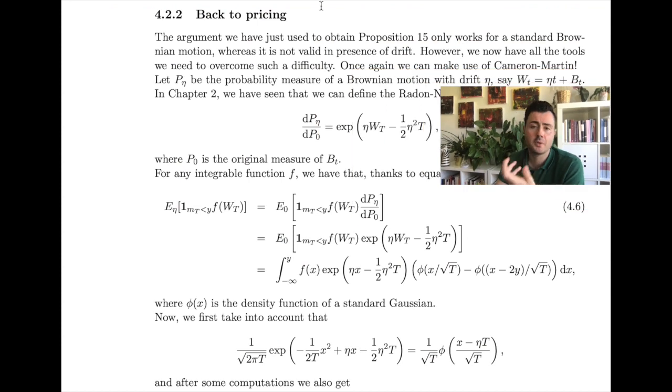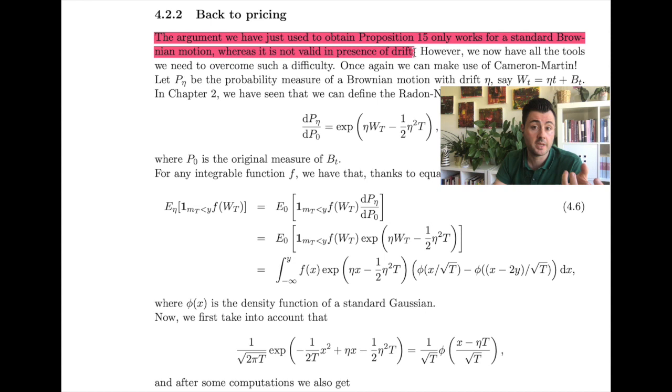Now, what we have just considered is the case of a standard Brownian motion. So the problem is what happens if we consider a Brownian motion with drift, which is typically our problem in the change of measure operation, from the physical measure to the risk-neutral measure. Now, the question is easily answered once again using the Cameron-Martin theorem. So we can always find a new measure that will be our risk-neutral measure under which the Brownian motion with drift behaves like a standard Brownian motion. And for this standard Brownian motion, we know what happens when we consider the max to date. So the idea is that to take what we have just said and to embed this stuff into the setting that is appropriate for our pricing purposes.